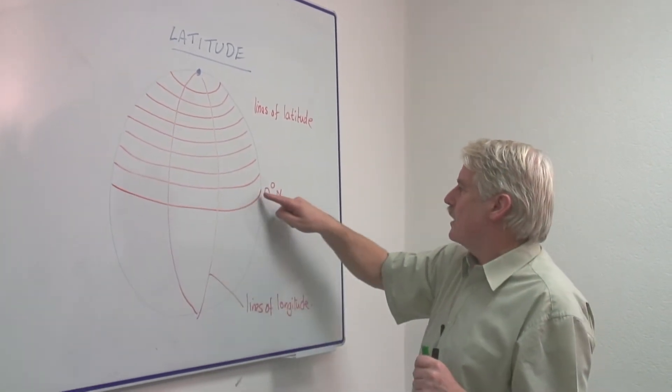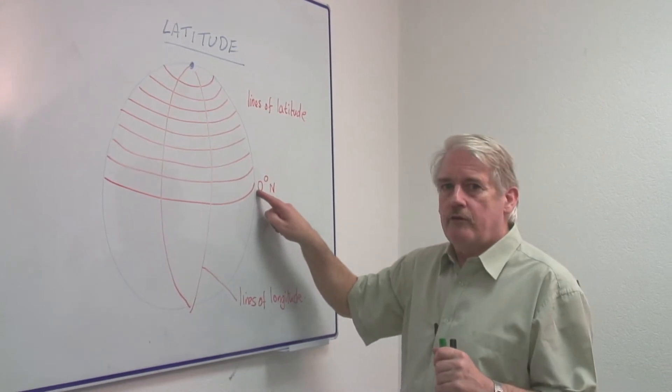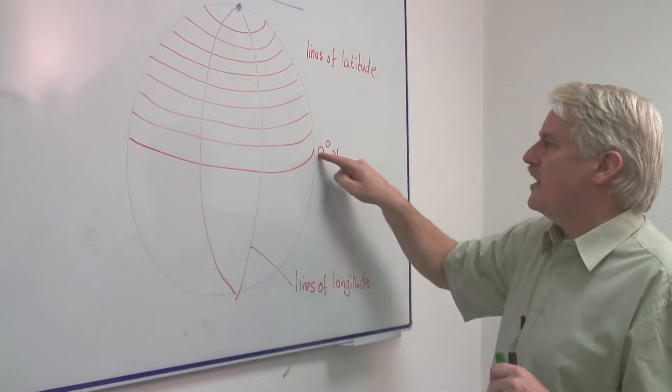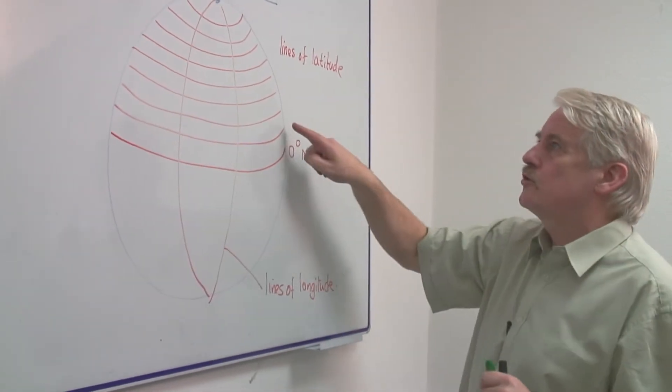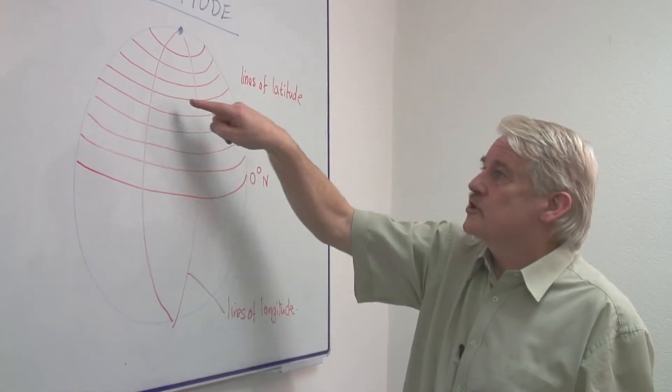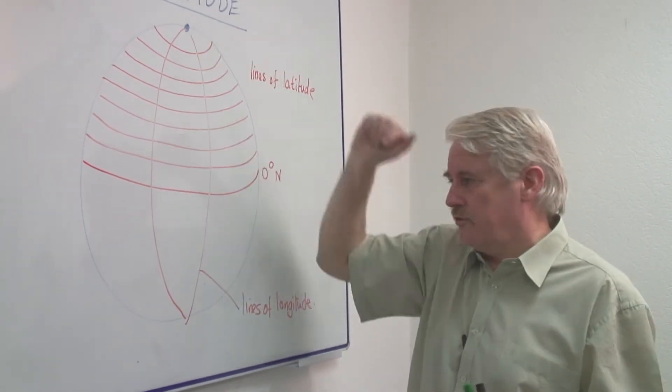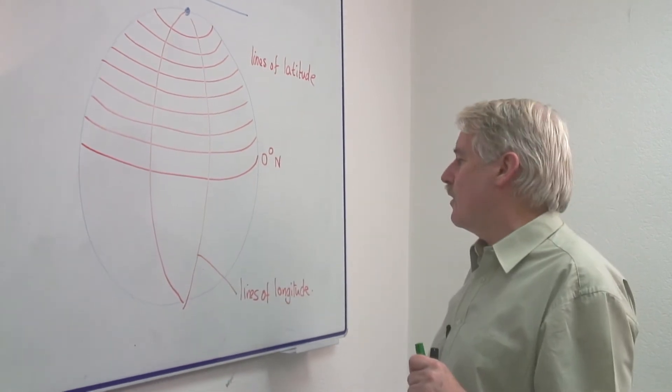The only great circle line is zero north, also zero south. That is a great circle, that is it's the biggest circle you can draw. These circles get smaller, so the lines of latitude get smaller the further north you go, and of course also the further south you go.